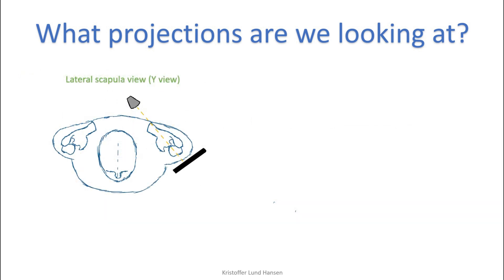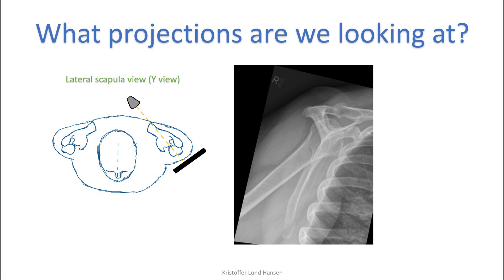The other common picture we can look at is the lateral scapula view, also called the Y view. It is taken from an angle from the back, and from this angle it will go straight through the scapula from the side. The reason why we like this picture is because it is great for evaluation of eventual dislocations. Also we get a different view of the bones so smaller fractures can more easily be seen. From this view the scapula looks like it forms a letter Y, and in the bifurcation of the Y the head of the humerus should be located — if it's not there then it is dislocated.